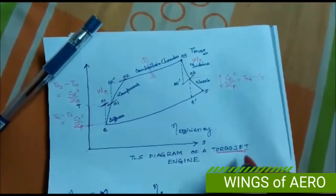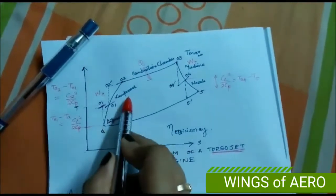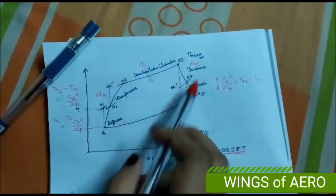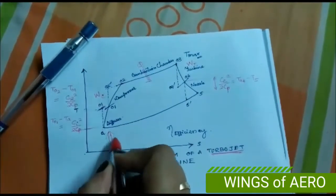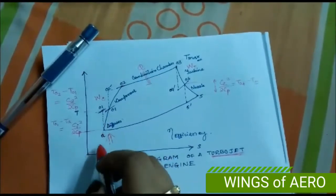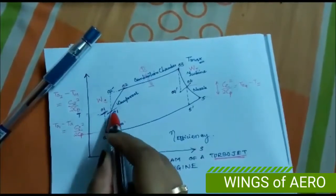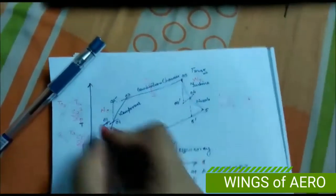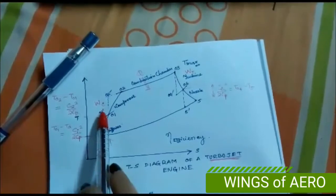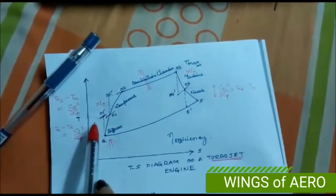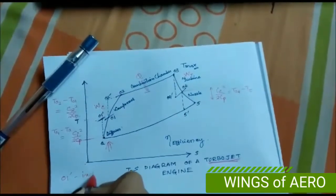The turbojet engine has five main components: diffuser, compressor, combustion chamber, turbine, and nozzle. The diffuser sucks in inlet air. On the T-S diagram, we can see the starting point. The notation 0-1 dash represents the ideal or isentropic condition, while 0-1 represents the actual condition.